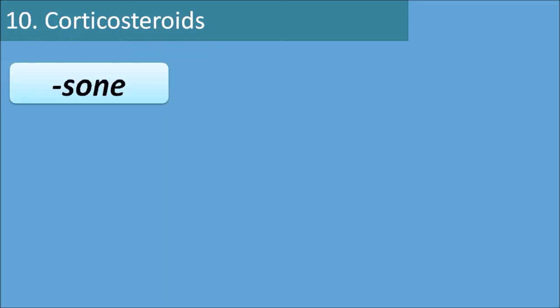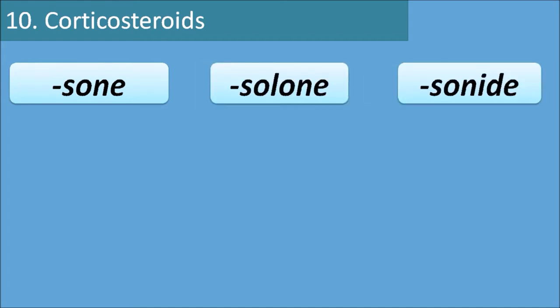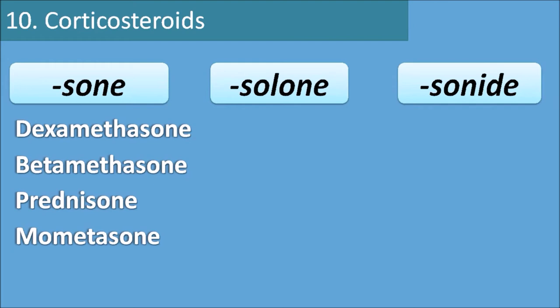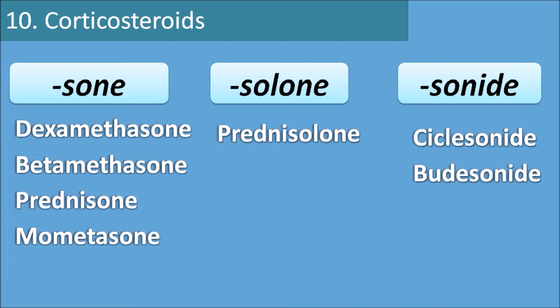The tenth category is corticosteroids, which have the suffixes 'sone', 'solone', and 'sonide'. Dexamethasone, betamethasone, prednisone, and mometasone all end in -sone. Prednisolone has the suffix -solone. Ciclesonide and budesonide have the suffix -sonide. Any of these three suffixes can be found within the corticosteroid category.